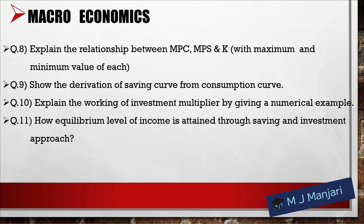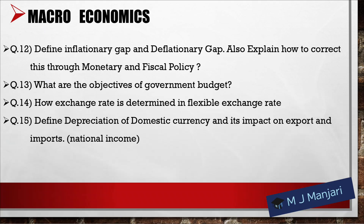Question 11: How equilibrium level of income is attained through saving and investment approach. Question 12: Define inflationary gap and deflationary gap. Also explain how to correct this through monetary and fiscal policy. Question 13: What are the objectives of government budget?